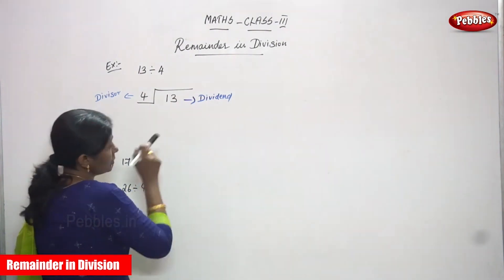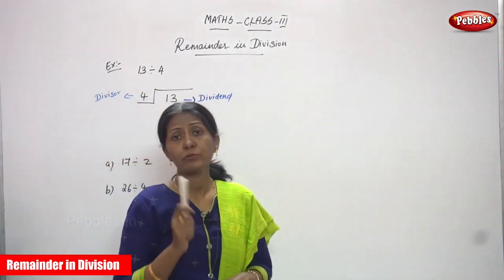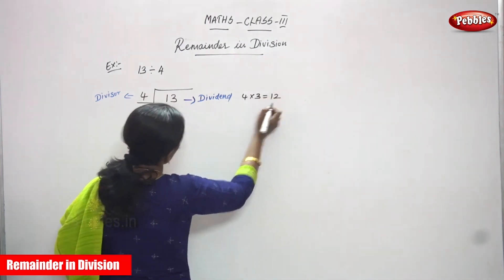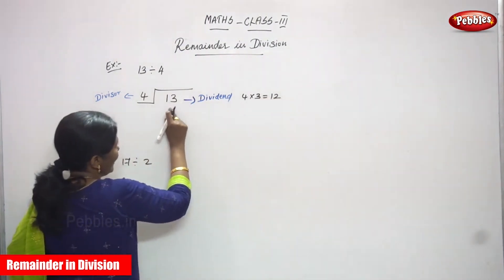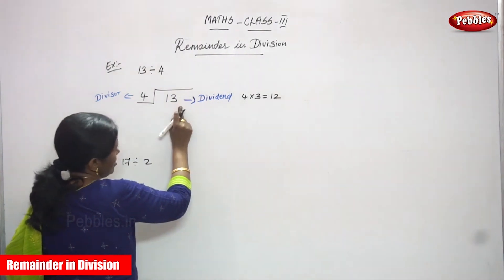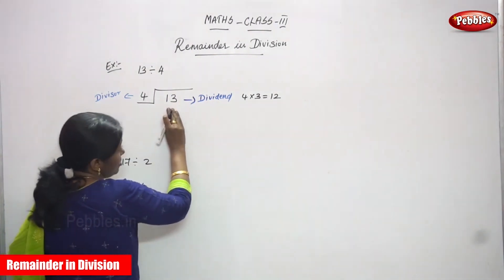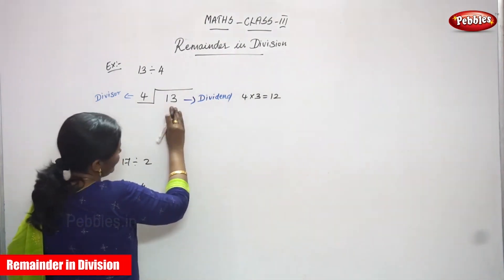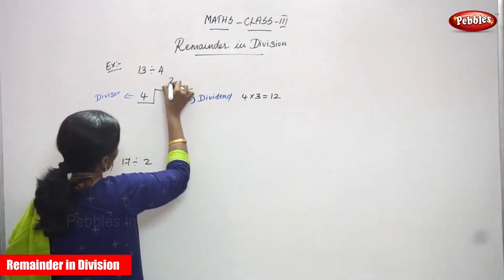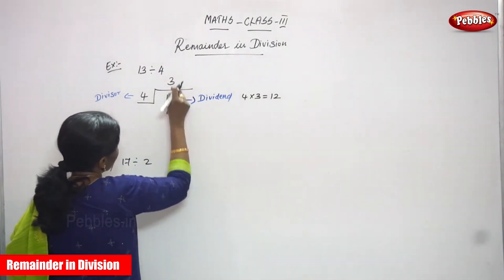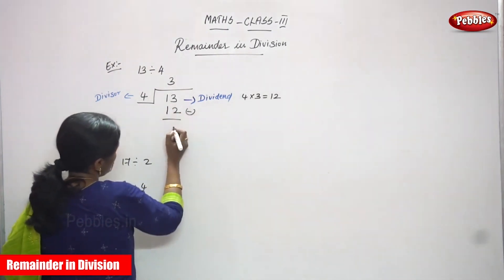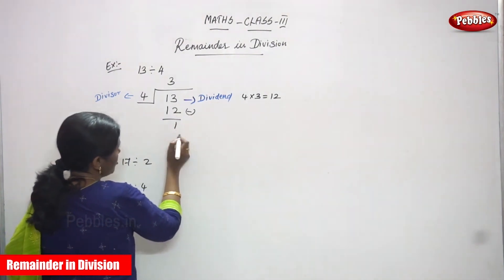You must use the four times table up to 13. So 4×1=4, 4×2=8, 4×3=12. So 4 into 3, you can get 12. You must write the number less than or below the dividend — always give the nearest value. So 4×3=12, and you must write 3 on top — that is the quotient. Write 12 below. After that, subtract: 3 minus 2 gives 1, and 1 minus 1 gives 0, so no need to write that.